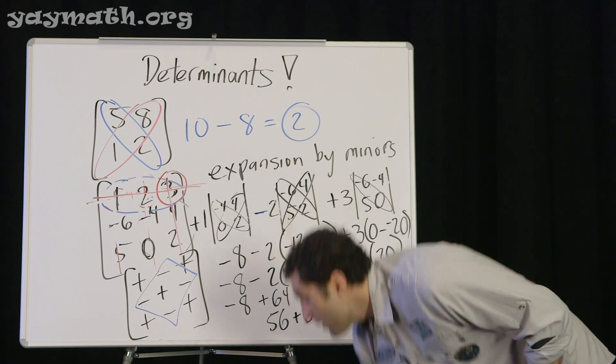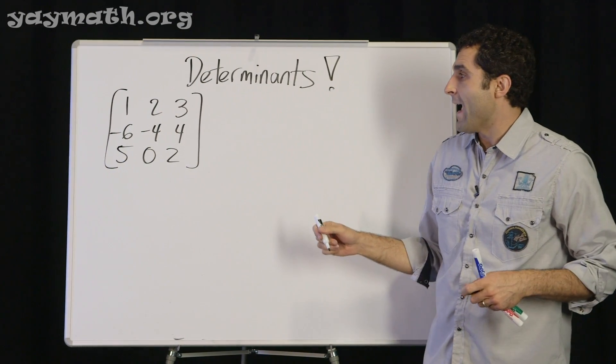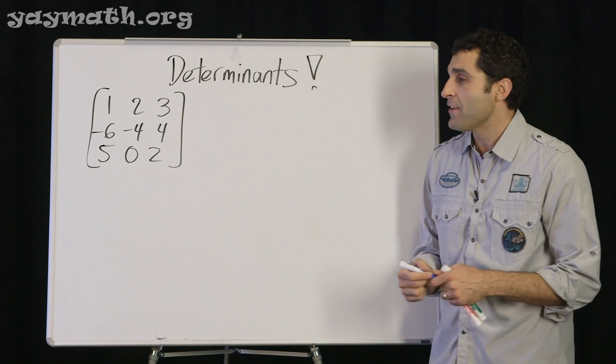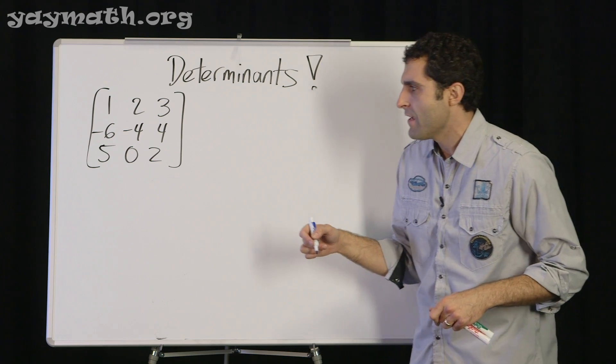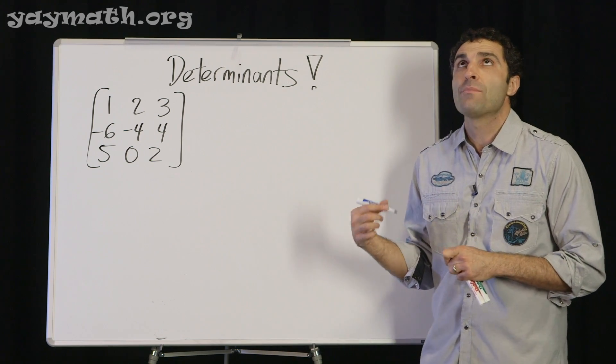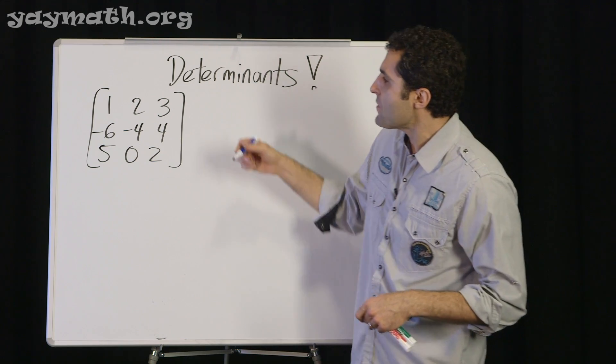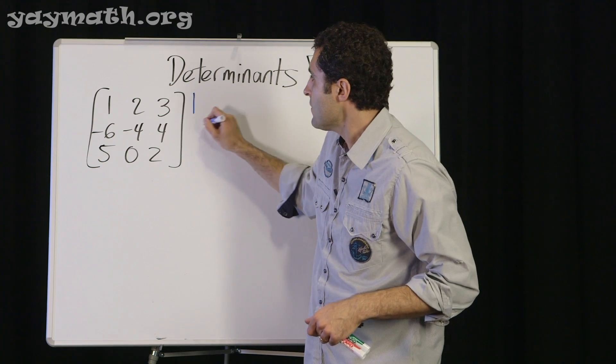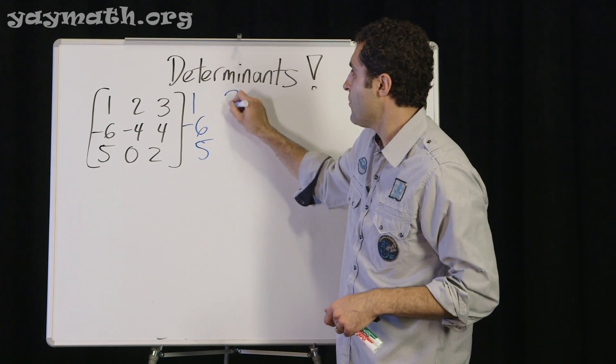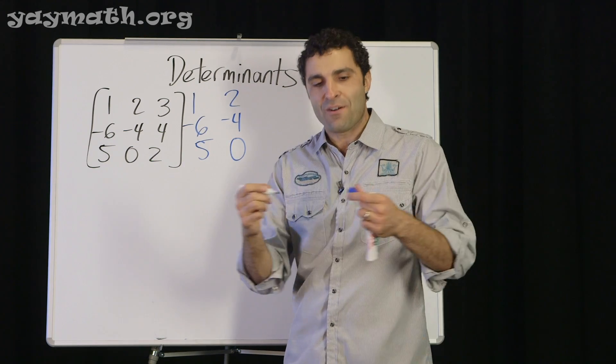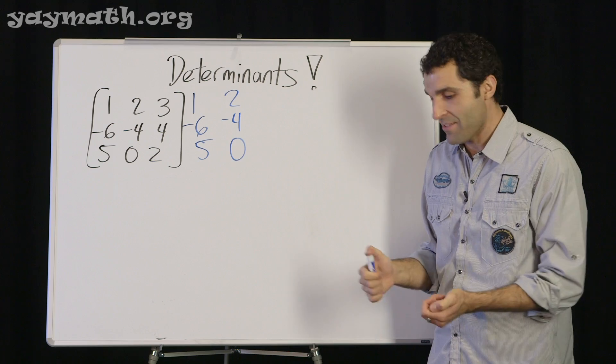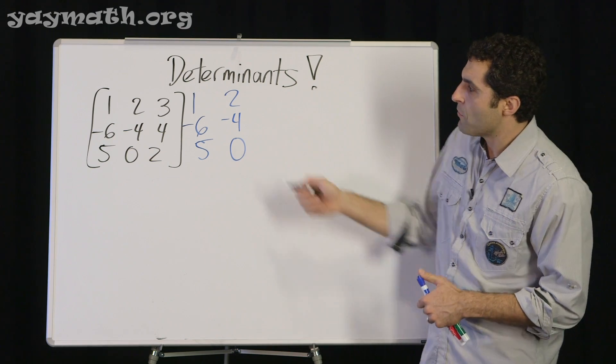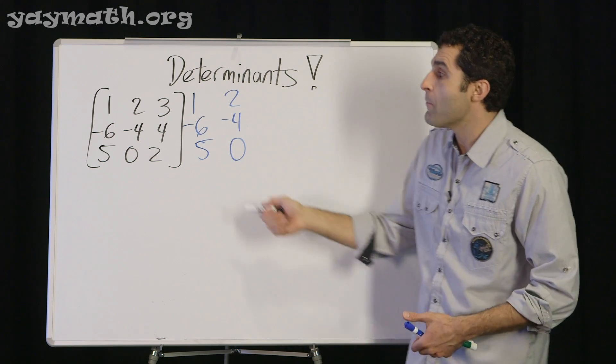Method two for a three by three determinant is called using the diagonals. This is my preferred method. I like it. And you'll see why. It's definitely less intensive and just a little more multiplication oriented. So all you do first is you recreate these two columns right over here: 1, negative 6, 5. 2, negative 4, 0. Who comes up with this? I don't know. It's incredible that someone figured out how to do this. I'm in shock. I'm totally enamored and in awe of that.